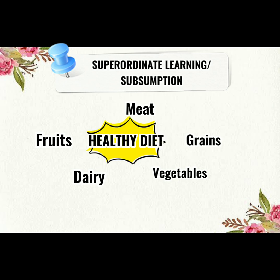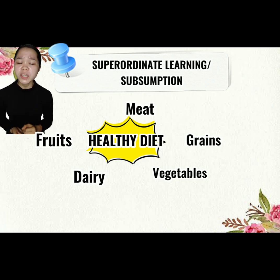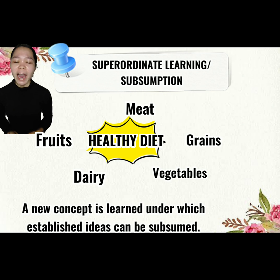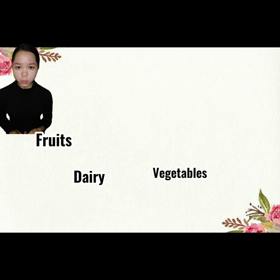In this case, you already know about these examples, but you didn't know the concept itself until it was taught to you. Therefore, in superordinate learning, a new concept is learned under which established ideas can be subsumed.